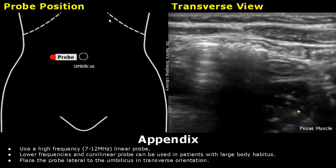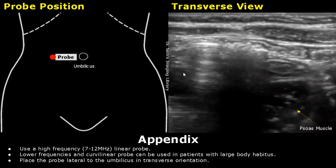Hello everyone, this is Dr. Sam and this video is about appendix ultrasound probe positioning. On the left side is a schematic diagram showing ultrasound probe position. These dotted lines are the right and left costal margins. This round structure is the umbilicus. This white box is the ultrasound probe and this red dot is the indicator or the orientation marker. On the right side is the image formed when we place the probe in this manner.